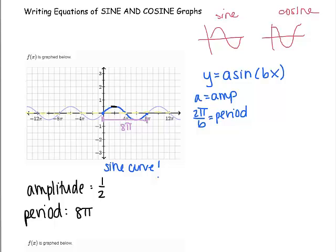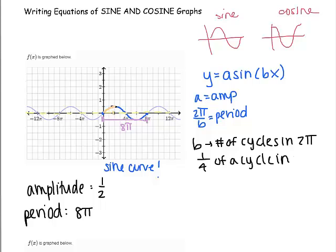So what I need to do is I need to figure out what that b value is going to be because I need to figure out what I'm going to put in that equation. Now remember that the b value tells you the number of cycles in 2π. So if you find 2π on here, if you find 2π is actually right here, how much of a cycle do you see in 2π? It looks like I see one fourth of a cycle in 2π. So I think that b might be 1 fourth.